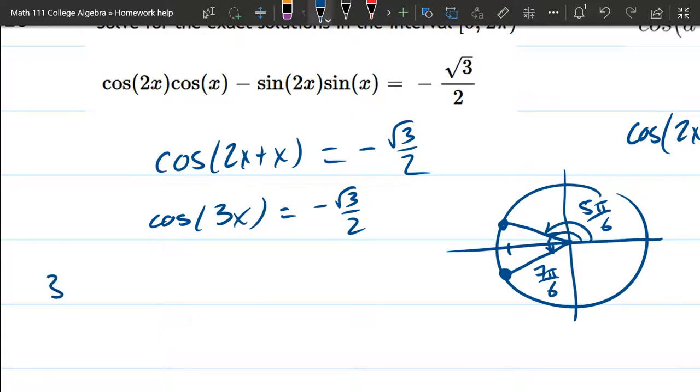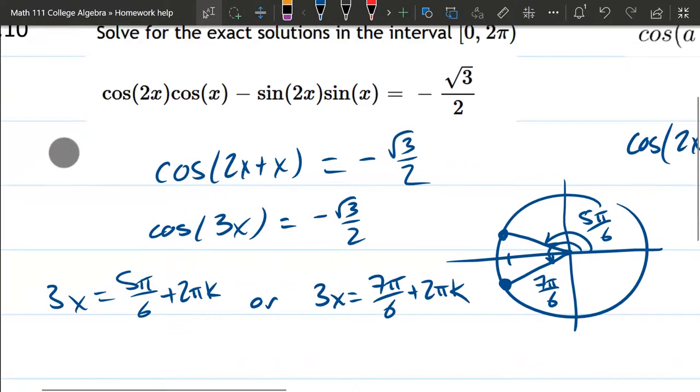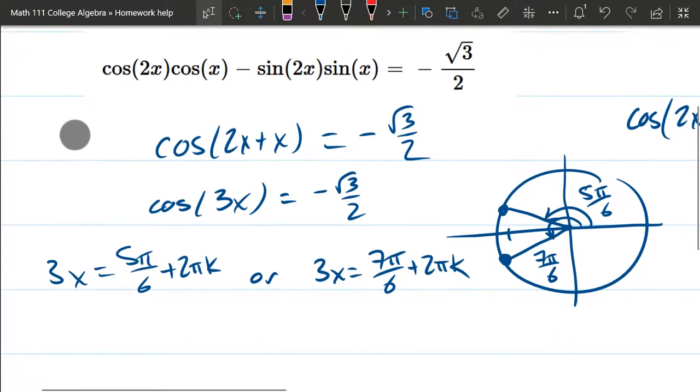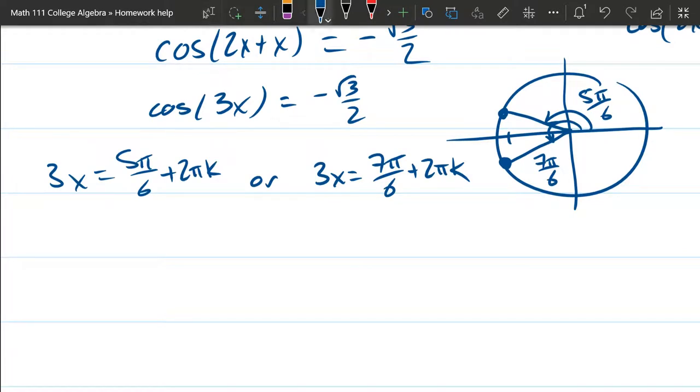So let's go ahead and write that down. We got 3x equals 5π over 6 or 3x equals 7π over 6. And of course, you can add 2πk to both of these. Now, we were not asked in this question about 3x. We were asked about x. So all we got to do is divide both these equations by 3. So when we divide by 3, I'm going to have 5π over 18 plus 2π over 3k, and x equals 7π over 18 plus 2 over 3πk.